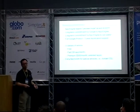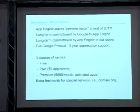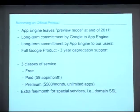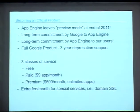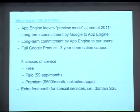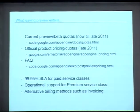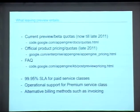App Engine is becoming an official product, coming out of beta at the end of this year. That means it won't be canceled, and if it ever were, there's a full three-year notice period. Three classes of service: free, paid, and higher paid. Premium service offers better support. There's also an extra fee for custom SSL. Pricing will be more official — still less than competitors but more than the near-free current pricing, with an SLA for guaranteed uptime.